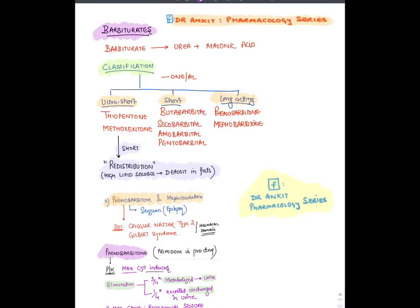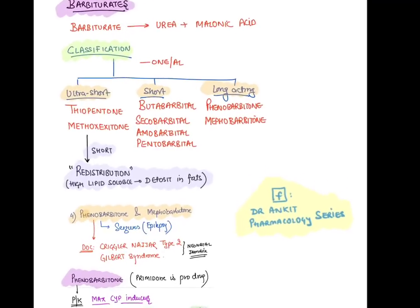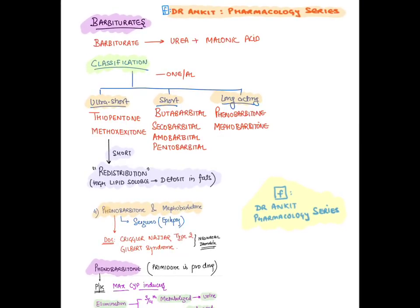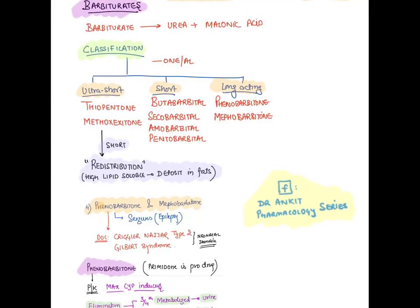Barbiturates are synthesized from urea plus malonic acid, and their names end with '-one' or '-al.' Ultra-short-acting barbiturates include thiopental (thiopentone) and methohexitone (methohexital). They are ultra-short acting because, when given intravenously, they are rapidly redistributed into fat — their action is terminated by redistribution, as they are highly lipid soluble.